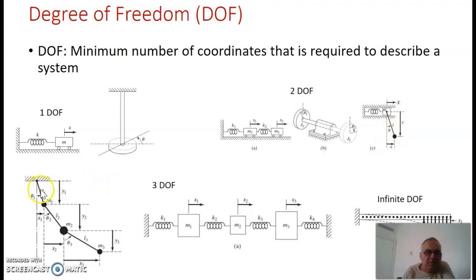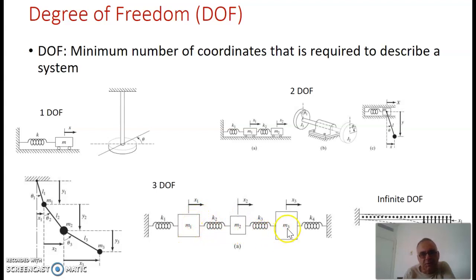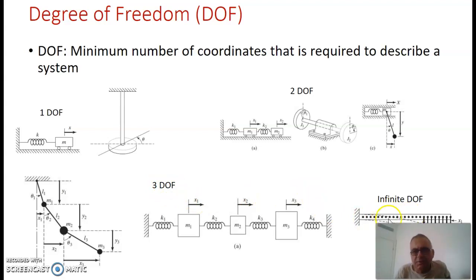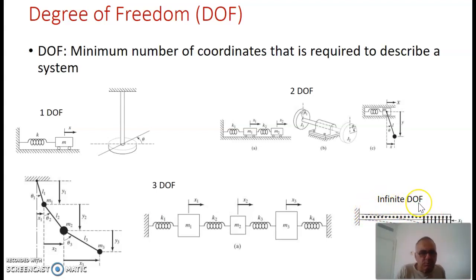A triple pendulum requires three degrees of freedom: theta₁, theta₂, and theta₃ to describe the motion of the masses. For a three-mass system, the differential equations contain x₁, x₂, and x₃. For a continuous system like a beam, every point has a degree of freedom, giving infinite degrees of freedom, and such a system is described by partial differential equations.